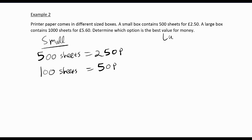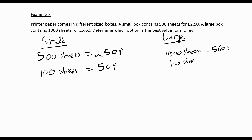The large box has 1,000 sheets for £5.60, so 1,000 sheets is 560p. Dividing both sides by 10, 100 sheets is 56p, which is more expensive. So, even though we wouldn't assume it, the small box is actually the best value for money — the small box is the best value here.